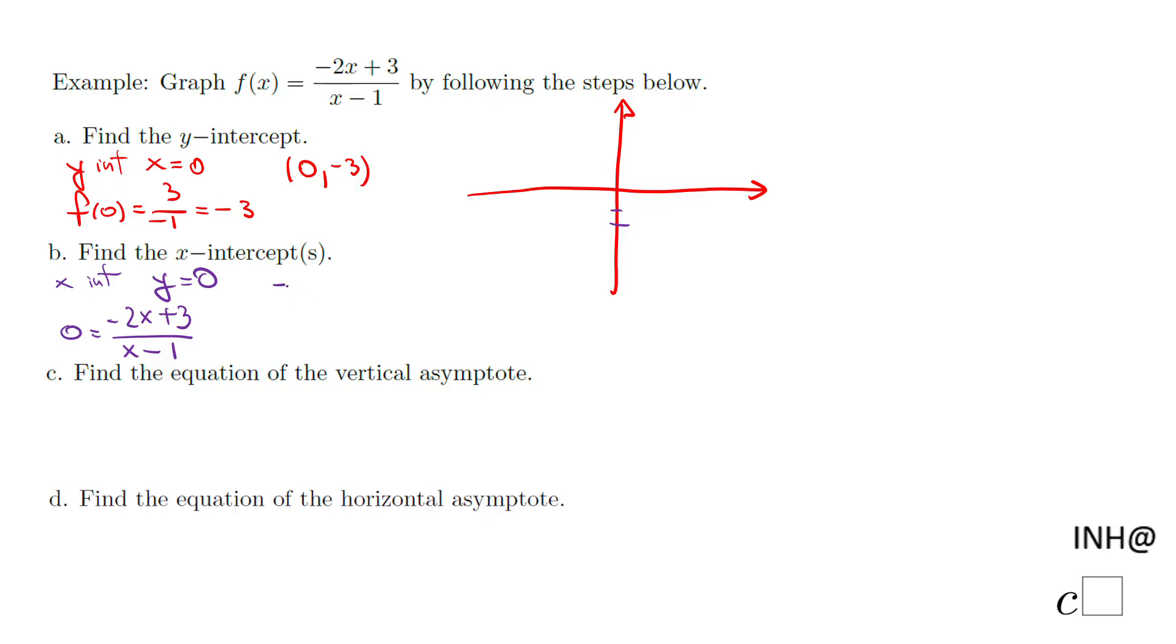So we have this linear equation, we solve it and we have negative two x equals negative three, and then divide by negative two we get three halves. So we have this point three halves and zero, this is what we call the x intercept.